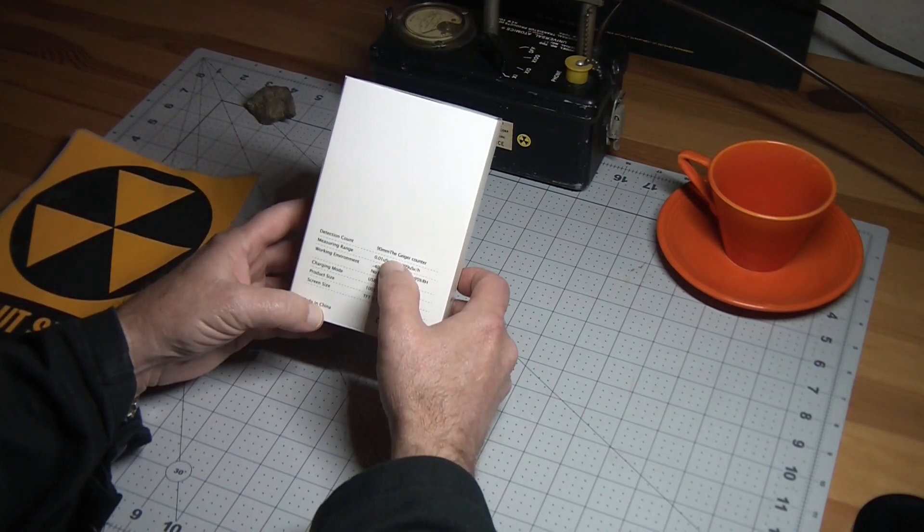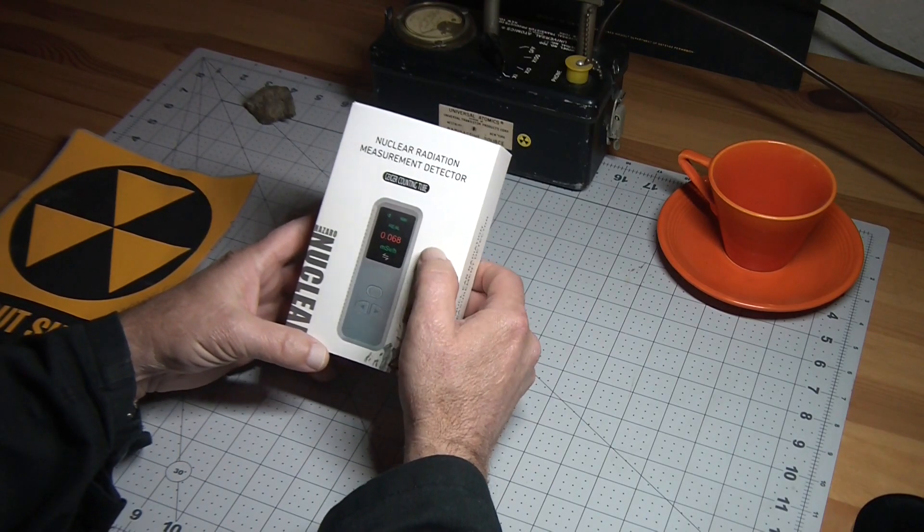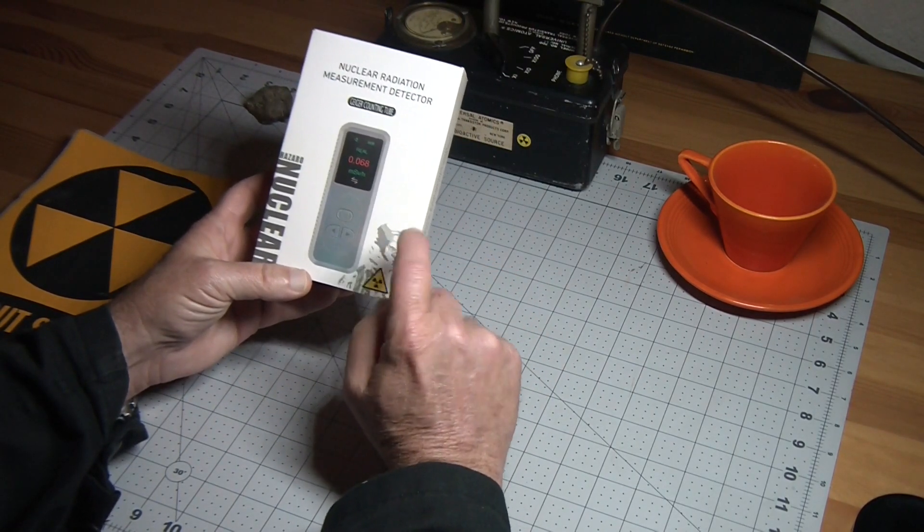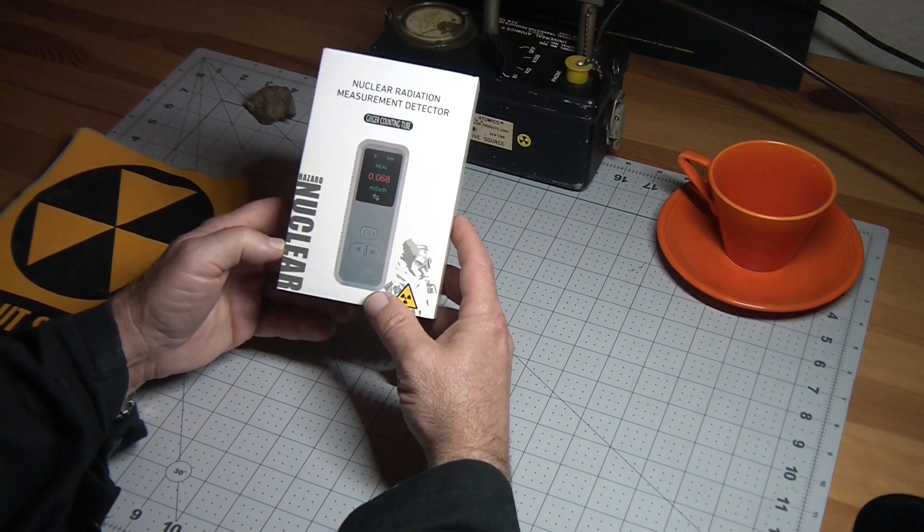Specifications are on the back here and they do actually have a real color screen. Cool box, little guy in his gas mask there. Hazaro. It's a Hazaro nuclear. Maybe that's a different language.